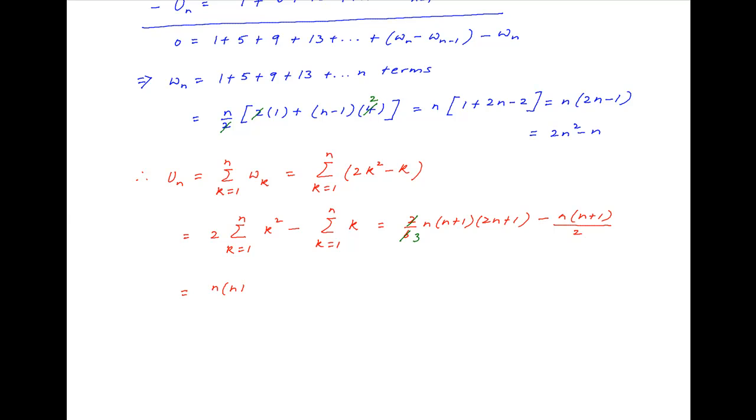This can be written as n times n plus 1 upon 6 multiplied by in brackets 2 times 2n plus 1 minus 3. And this simplifies to n times n plus 1 upon 6 multiplied by 4n plus 2 minus 3.